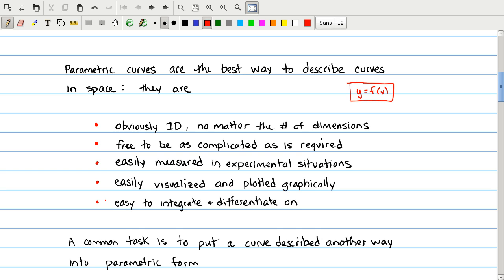No other way of representing them has all of these advantages. And so we want to really learn a little bit about how these things work, how to write them down, and so on. And a common task that we'll find is to have a curve described in some other way, perhaps verbally, perhaps as the intersection of some surfaces or something like this, to take such a verbal description and come up with the parametric equations for a curve.